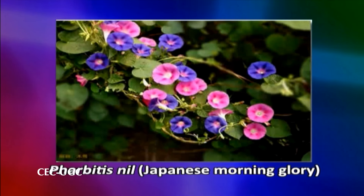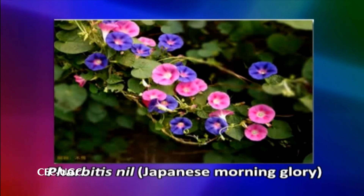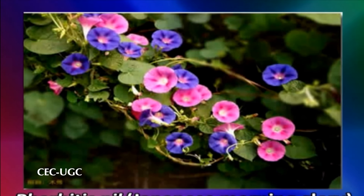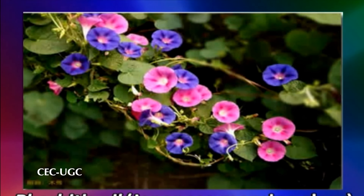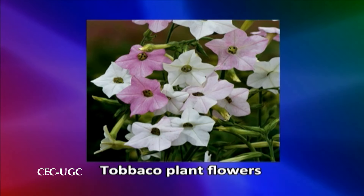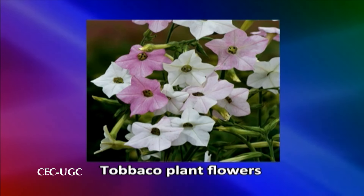On the other hand, a plant like Farbitis nil or Japanese Morning Glory is ripe to flower within a day after the cotyledons have emerged. Most common cultivated plants and weedy annuals, however, attain the ripe to flower condition two to three weeks after seedling emergence, when a few leaves have fully developed. Similarly, a tobacco plant flowers only after it produces about 41 nodes and about 37 leaves.